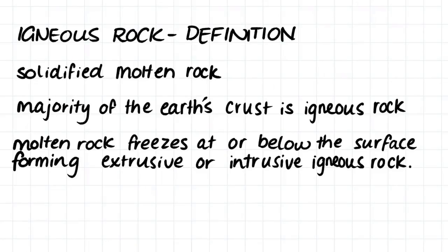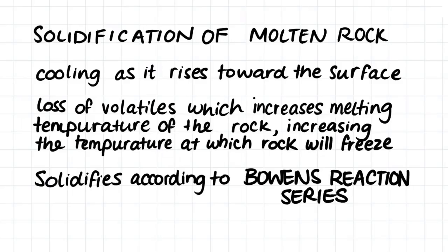Igneous rock forms from the solidification of molten rock, and the majority of the earth's crust is actually made up of igneous rock. This molten rock freezes at or below the earth's surface. When it freezes at the earth's surface as lava, we form extrusive igneous rock, but when it freezes below the earth's surface as magma, we end up with intrusive igneous rock.